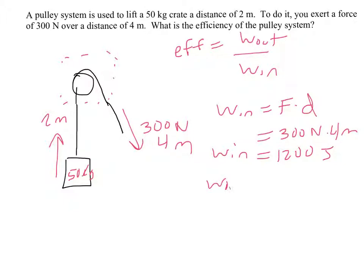The work-out is the force that is exerted times the distance, the effective distance it acts. Now, 50 kilograms is the mass of this, but remember that translates to a 500 newton weight.